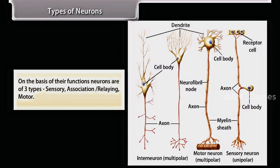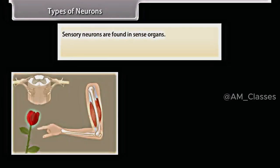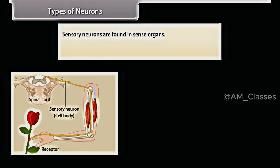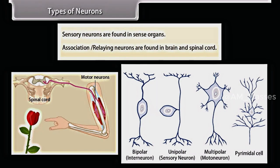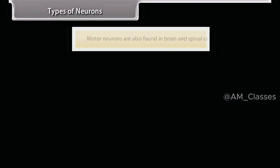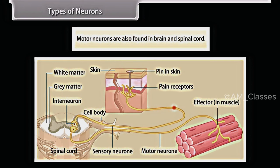On the basis of their functions, neurons are of three types: sensory, association/relaying, and motor. Sensory neurons are found in sense organs. Association/relaying neurons are found in the brain and spinal cord. Motor neurons are also found in the brain and spinal cord.